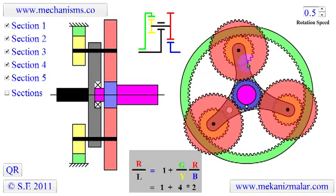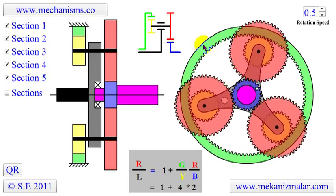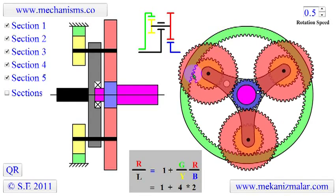Epicyclic gearing systems also incorporate the use of an outer ring gear, or annulus, which meshes with the planet gears.